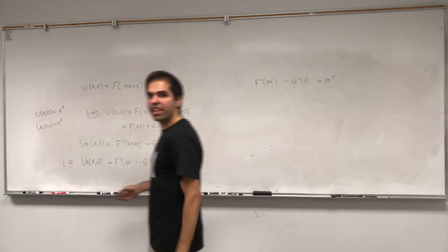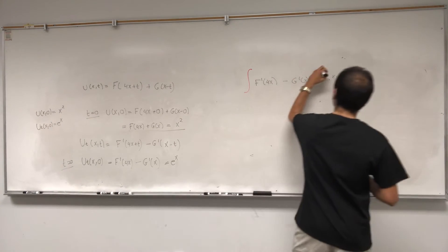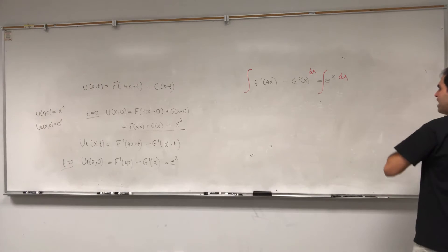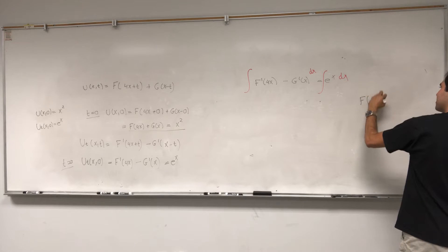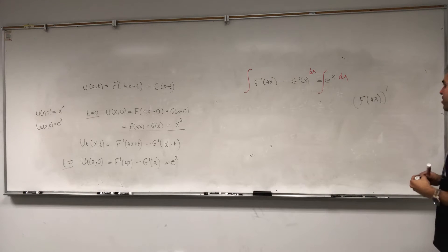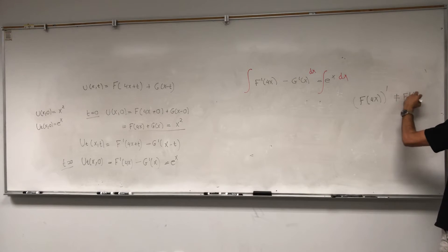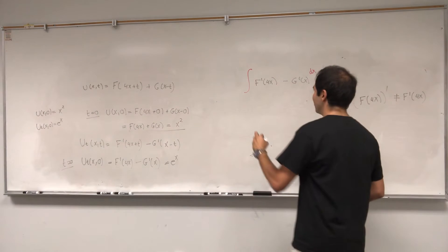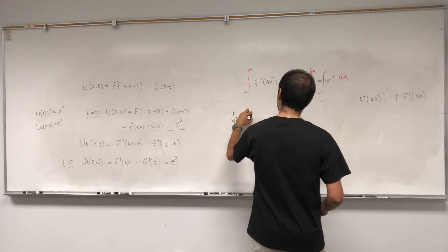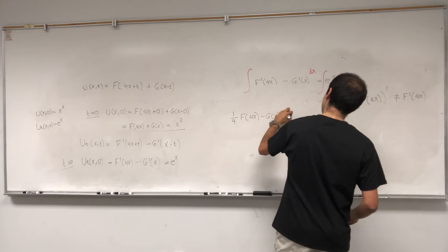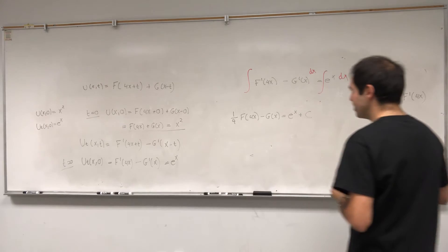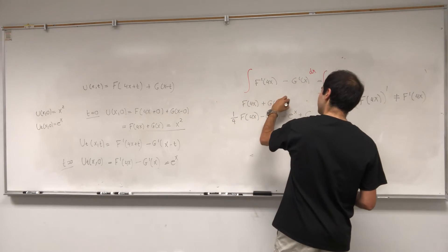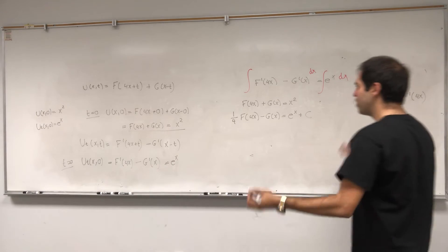To get an identity with f and g, integrate both sides with respect to x. Be careful: an antiderivative of f′(4x) is (1/4)·f(4x), not f(4x) — think of e^(4x) becoming (1/4)e^(4x). So we get (1/4)·f(4x) minus g(x) equals e^x plus a constant C. That's one identity. The other one is f(4x) plus g(x) equals x squared.